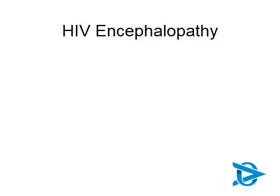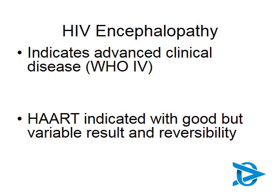We want to look at HIV encephalopathy in children, as it's quite different from the picture we see in adults. When you have a child with HIV encephalopathy, that shows advanced clinical disease — it's usually end-stage HIV. These would be children where the HIV diagnosis has been missed for many years. ARVs certainly help and can give variable results, but it's not always reversible. Therefore, it's essential to diagnose children early with HIV and get them onto ARVs.